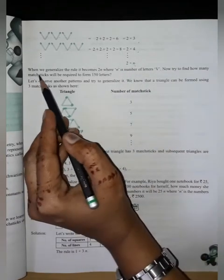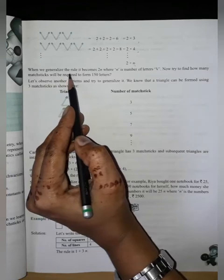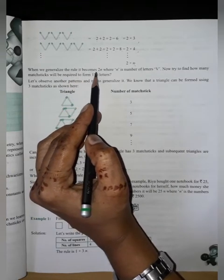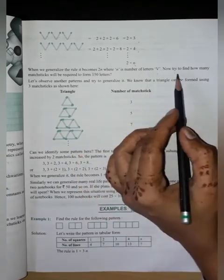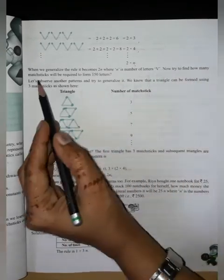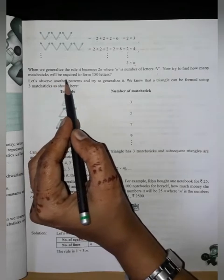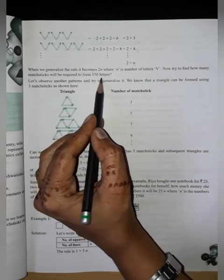When we generalize, the rule becomes 2n where n is number of letters V. Now try to find how many matchsticks will be required to form 150 letters.